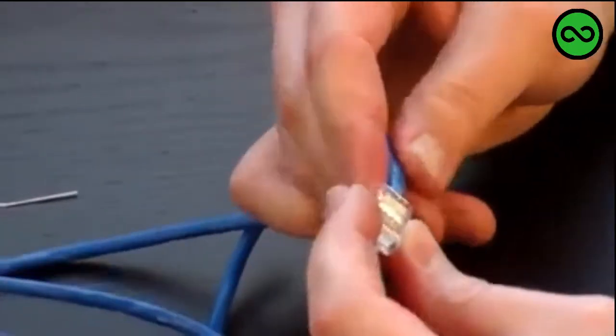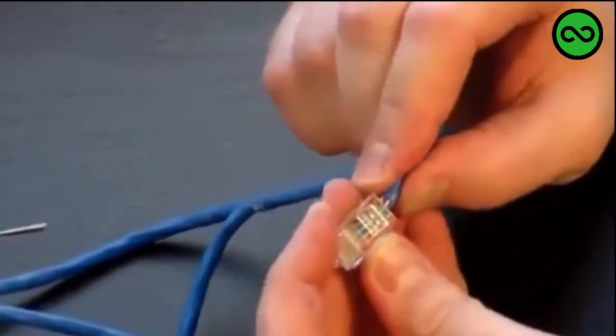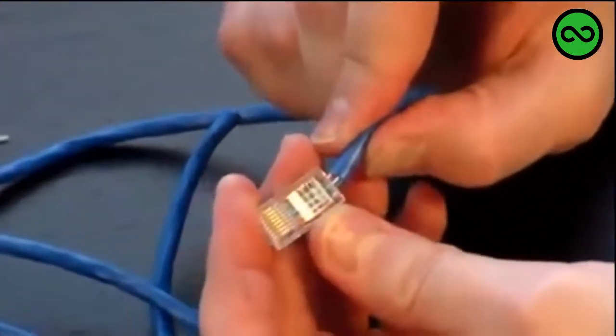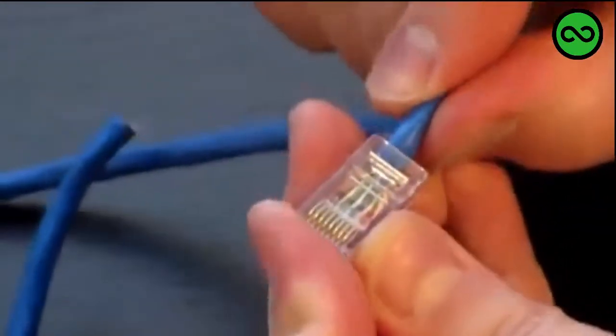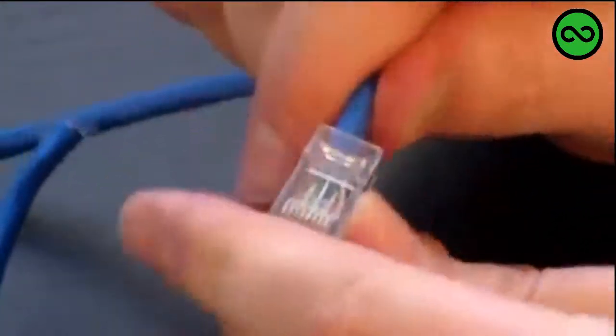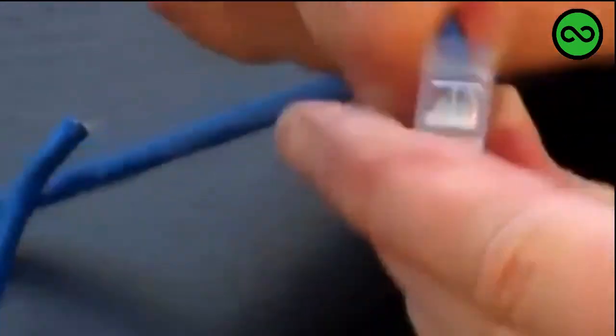You want to funnel those wires inside, maintaining that specific color sequence, just like that. I'll just insert mine a little bit more. Make sure that some of the sheathing gets in there a little bit, makes it nice and clean.